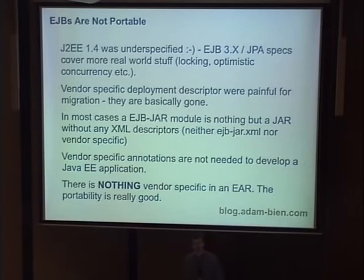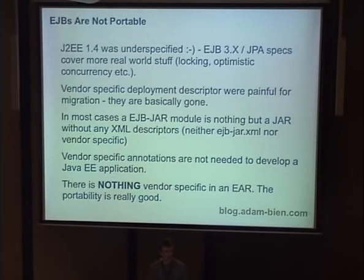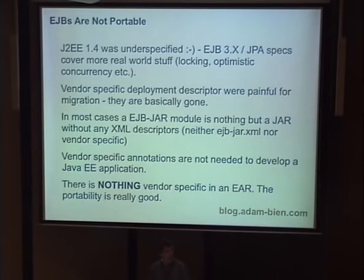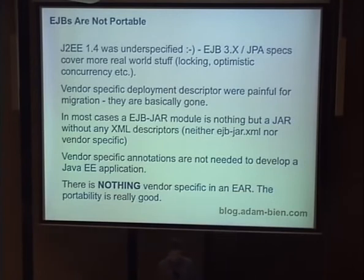The portability story is really great. The only problem is whether it will behave as we expect in production. For instance, you always have to test the persistence because OpenJPA is a little bit different to Hibernate, and Hibernate to TopLink. But from the portability story, it's just great. And what we are able to do now is get better prices for commercial servers — just because of that fact. We say, okay, it's too expensive; if you do not give us a good price, we can move to JBoss or GlassFish. So it's also very good for strategic reasons. Vendor-specific deployment descriptors are basically gone — in the EJB JAR there are no XML descriptors and nothing vendor-specific. In all my projects there was no sun-ejb-jar.xml, JBoss.xml, or WebLogic — nothing. It's just pure spec, and it works.